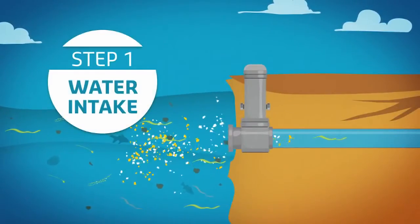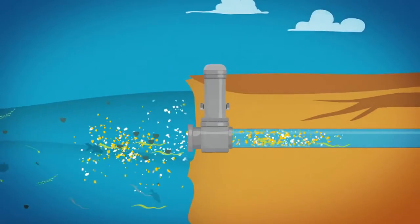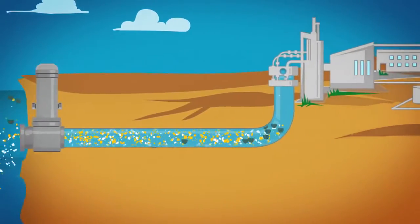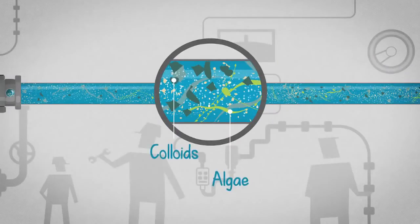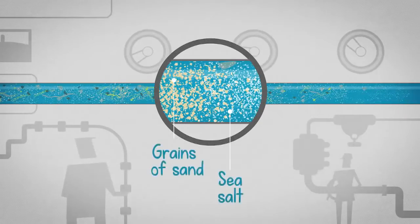To protect the marine ecosystem, seawater is pumped at a speed three times slower than a fish swims. This water is then filtered to remove all particles such as algae and sand.